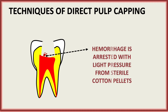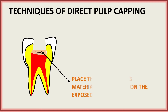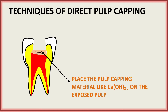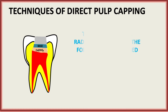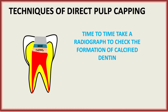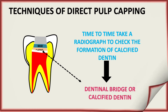Bleeding or hemorrhage at the site should be arrested with light pressure from sterile cotton pellets. Then place the pulp capping material — like calcium hydroxide — on the exposed pulp, which will help in formation of a dentinal bridge. Apply base cement, then place a temporary restoration. Take radiographs periodically to check for formation of calcified dentine.